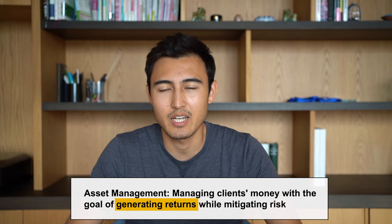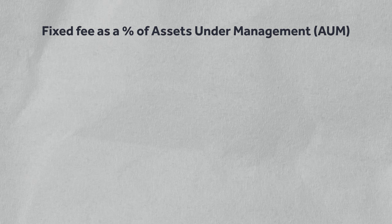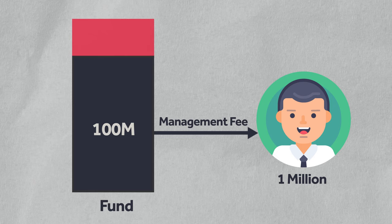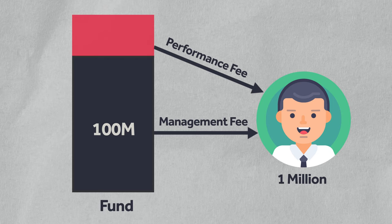Asset management is about managing clients' money with the goal of growing that money — generating returns over time while mitigating risks. Compensation is usually a fixed fee that's a percentage of assets under management. For example, if a fund has a hundred million dollars under management, one percent — one million dollars — would be their annual fixed fee. Some funds also have a variable component based on performance, essentially like a bonus.